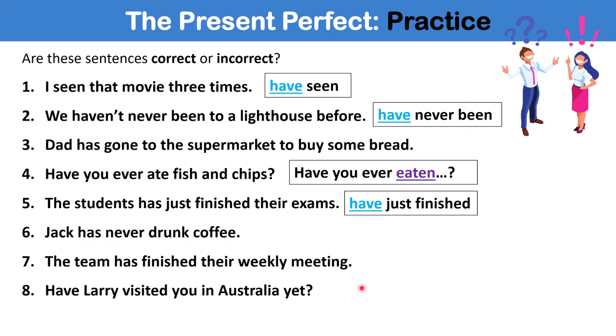That would be incorrect. Number seven is also correct. And finally, number eight, we also have an error. Again, with subject verb agreement, it should be, has Larry visited you? Because Larry is a he, and we say, has he, not have he.